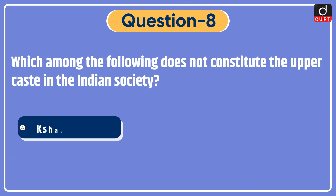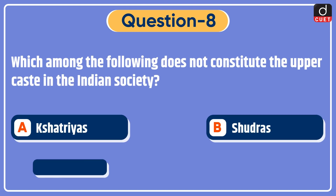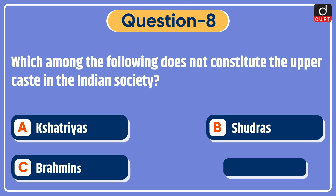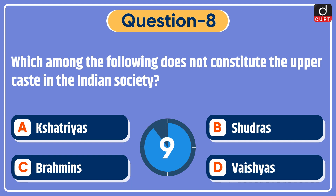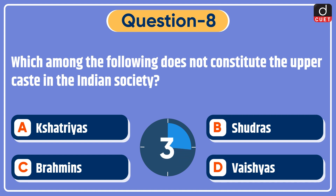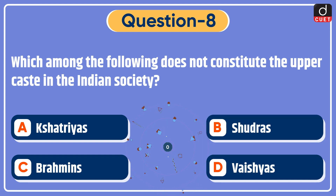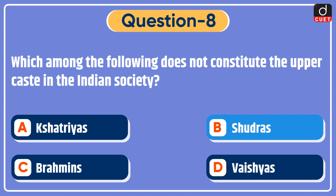Next question: which among the following does not constitute the upper caste in Indian society? Kshatriyas, Shudras, Brahmins, or Vaishyas? The correct answer is option B, Shudras.